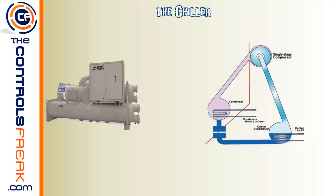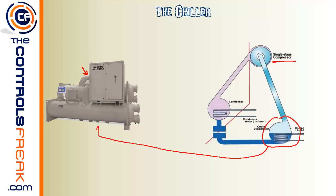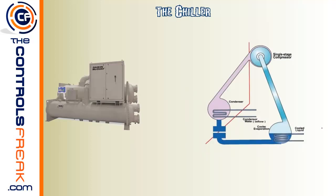First stop on the list is going to be the chiller. You can't have a chiller plant without the chiller, so let's start there. We've got a picture here of a McQuay centrifugal chiller. There are many different types of chillers, but we're going to stick with a centrifugal chiller and briefly talk about its three main parts: the compressor, the evaporator section which is typically the bottom barrel, and the condenser section which is the upper barrel.